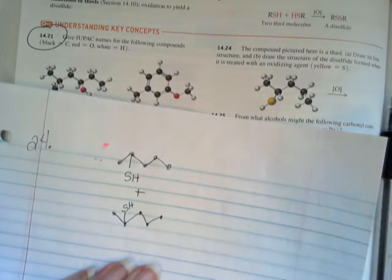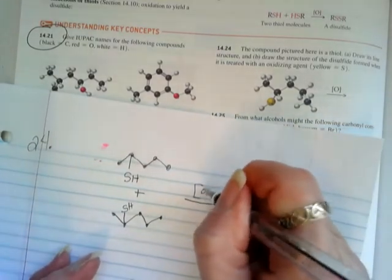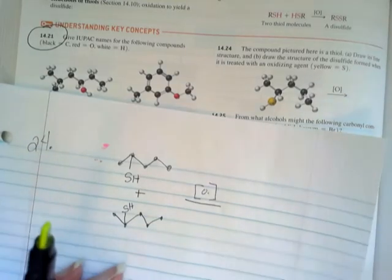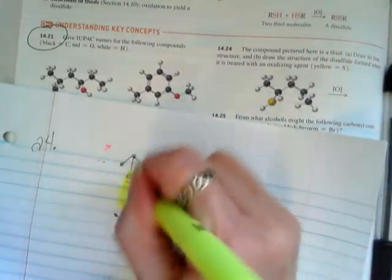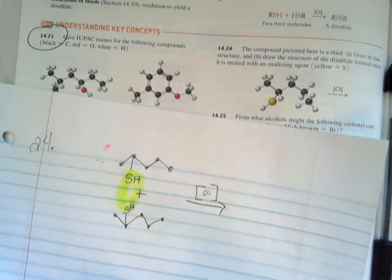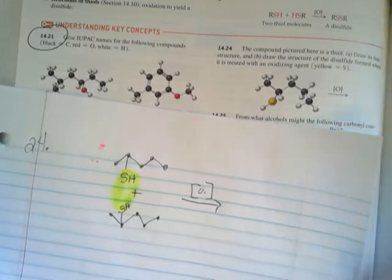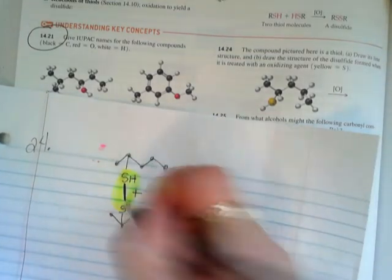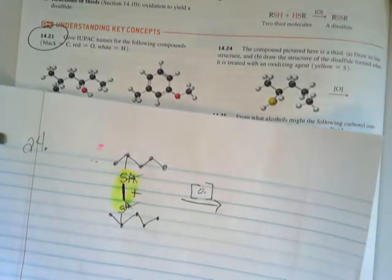But remember, when you have this oxidation reaction going on, these two things are going to join up and form a disulfide. The hydrogens are going to go away and these two sulfurs are going to link up together. So you can just simply draw that line there, X out those two hydrogens.